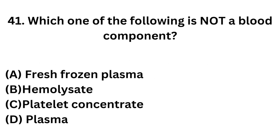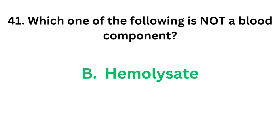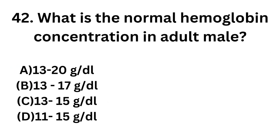Question number 41: Which one of the following is not a blood component? Option A: Fresh frozen plasma. Option B: Hemolysate. Option C: Platelet concentrate. Option D: Plasma. Fresh frozen plasma, platelet concentrate, and plasma are components of blood. So the correct answer is option B, hemolysate. Hemolysate is a product of hemolysis.